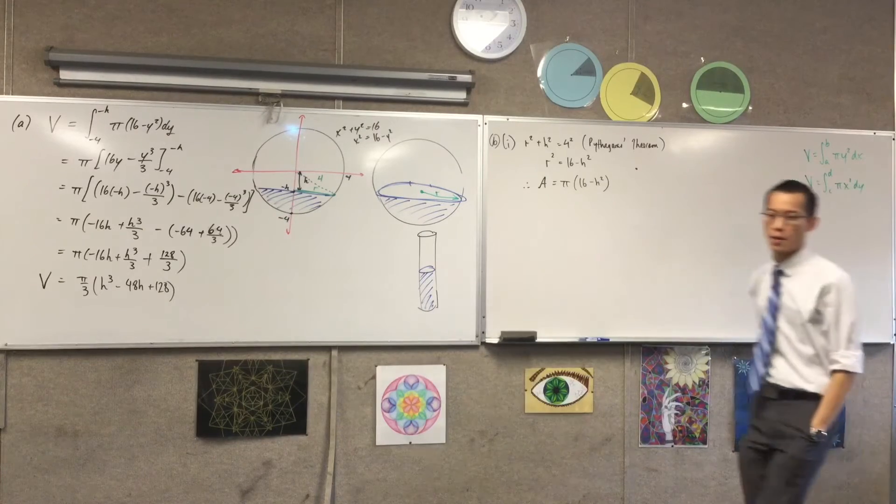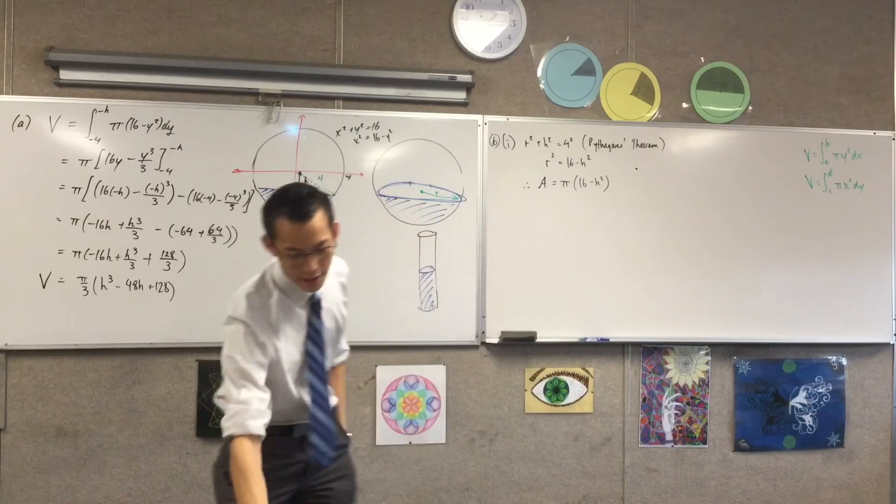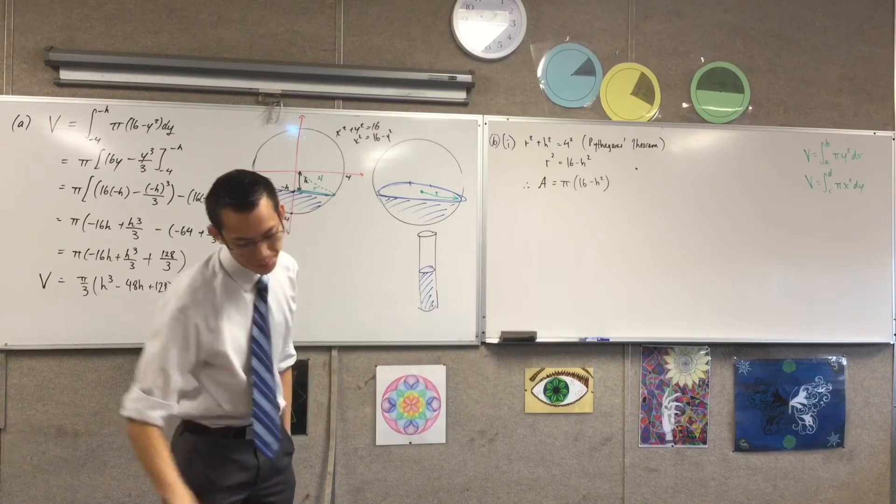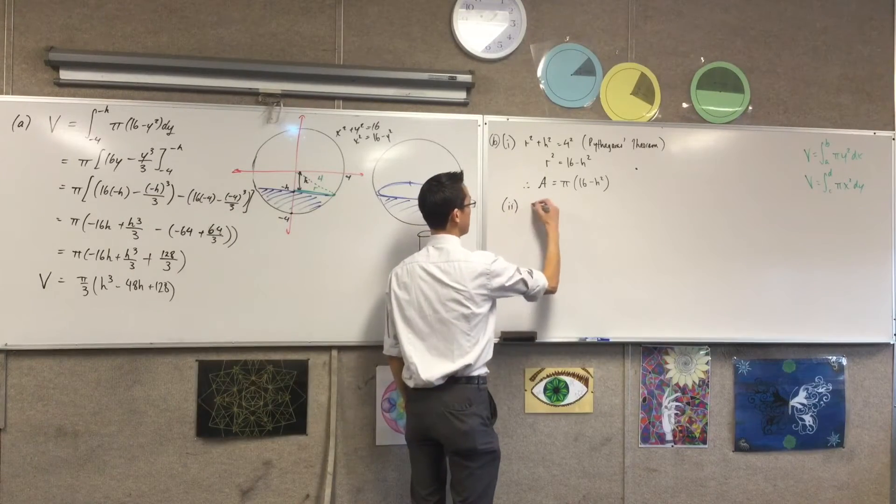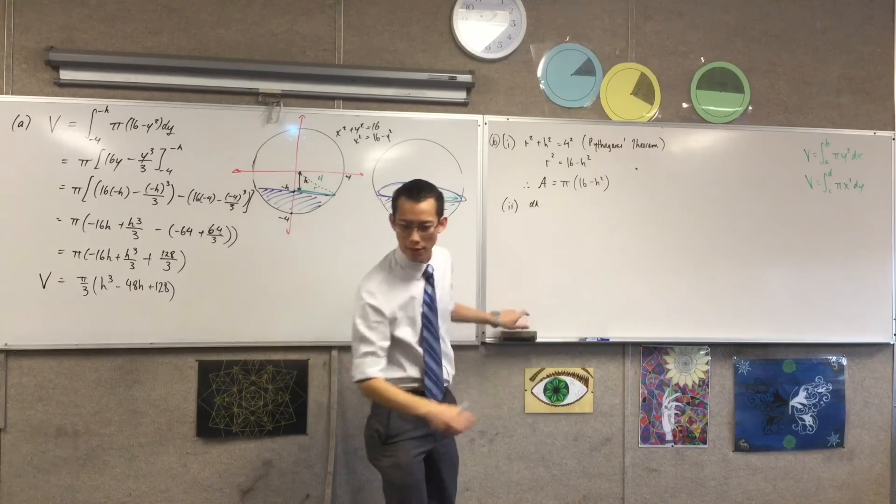Okay, so that's all they wanted for part one, just to find that area. Then they give us a new piece of information. We are told this is part two now. We are told that, oops, this should be a V shouldn't it? Yep.